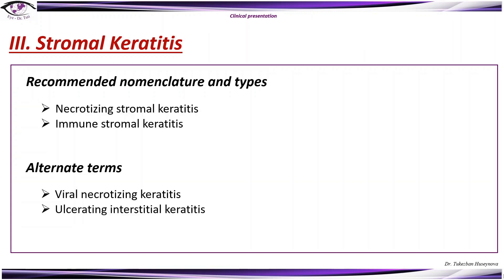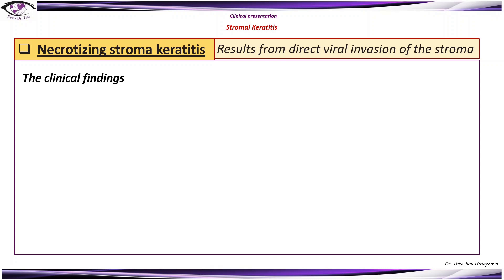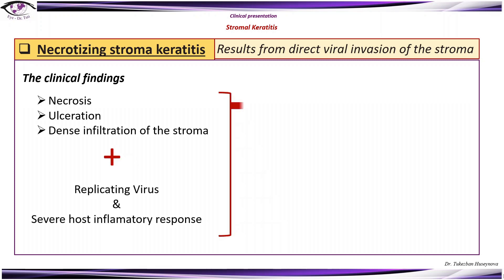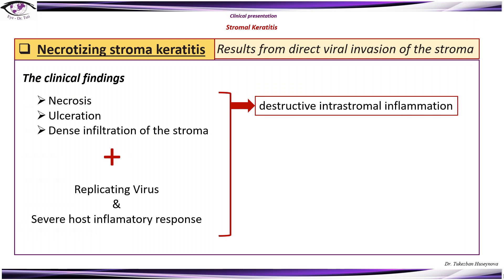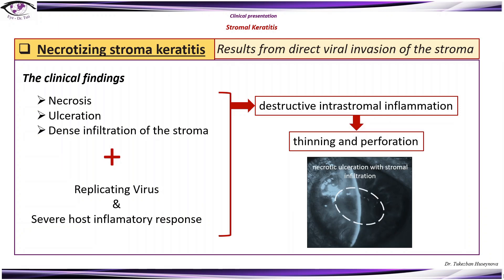Stromal keratitis types include necrotizing and immune stromal keratitis, and may also present as limbal vasculitis, immune ring of Wessely, necrotic interstitial keratitis, and endothelitis with and without trabeculitis, which can present with increased intraocular pressure. Necrotizing stromal keratitis results from direct viral invasion of the stroma. Clinical findings include necrosis, ulceration, and dense infiltration of the stroma with an overlying epithelial defect. Severe inflammation can lead to destructive inter-stromal inflammation, requiring high-dose anti-inflammatory and antiviral medication, and may lead to thinning and perforation within a short period.